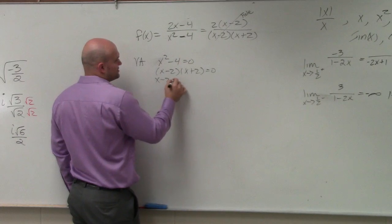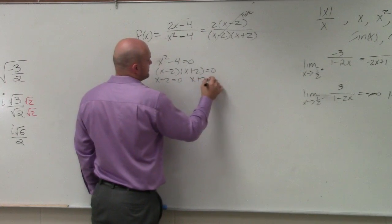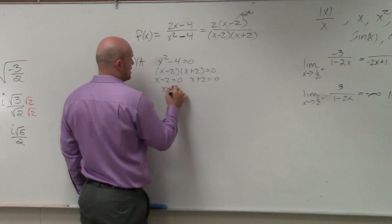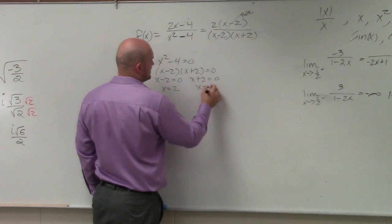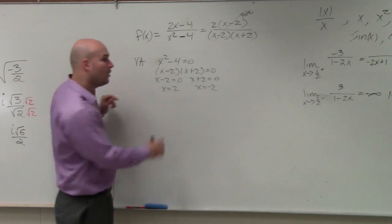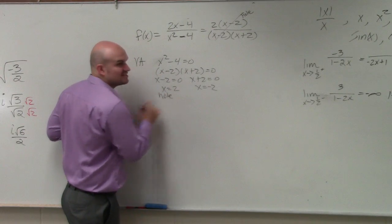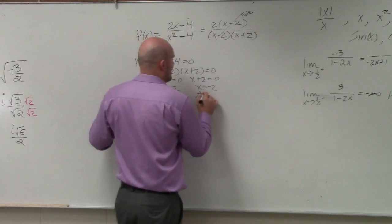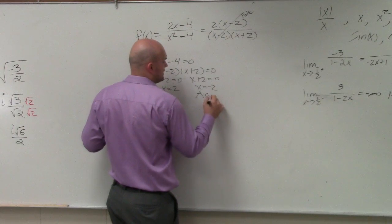So therefore, x minus 2 equals 0 and x plus 2 equals 0. So therefore, our discontinuities are x cannot equal 2 and x cannot equal negative 2. However, x minus 2 is a what? Hole, because it's removable. So x equals negative 2 is our only asymptote.